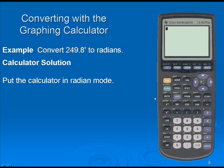I will enter 249.8 degrees. The degree symbol is in our angle function, so it is second apps. Angle is our first option, so hit enter. Hit enter once again for 4.359832471 radians.